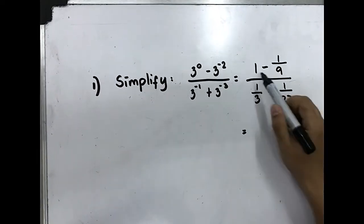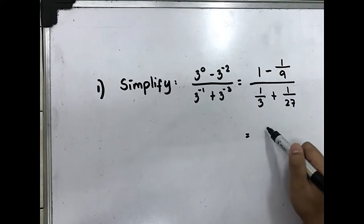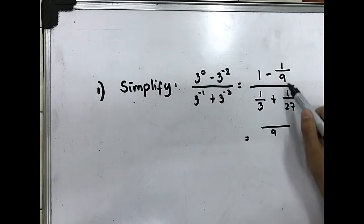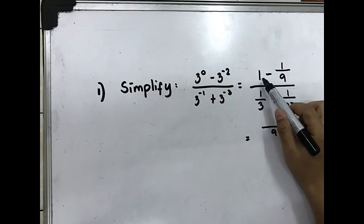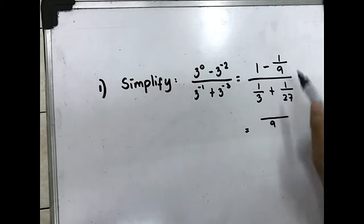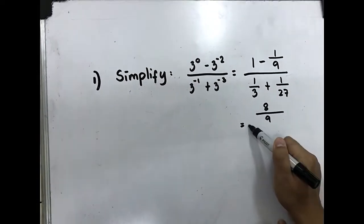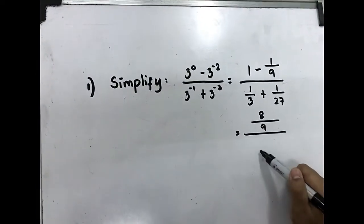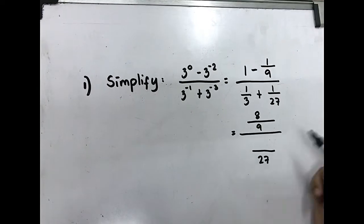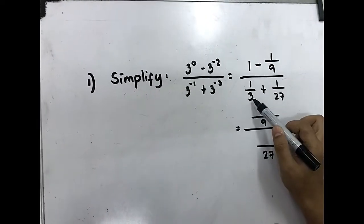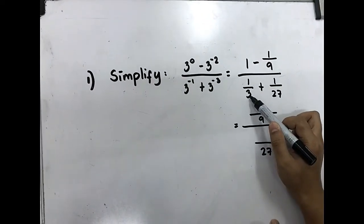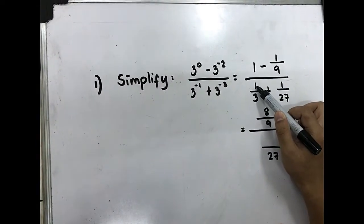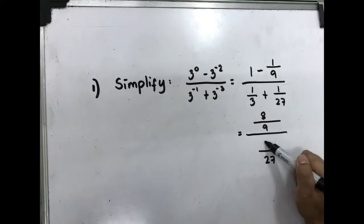Simplify 1 minus 1 over 9. The LCD is 9, so 9 times 1 gives 9 minus 1, which is 8. Over: the LCD of 3 and 27 is 27. 27 divided by 3 is 9, times 1 gives 9, plus 1 equals 10.